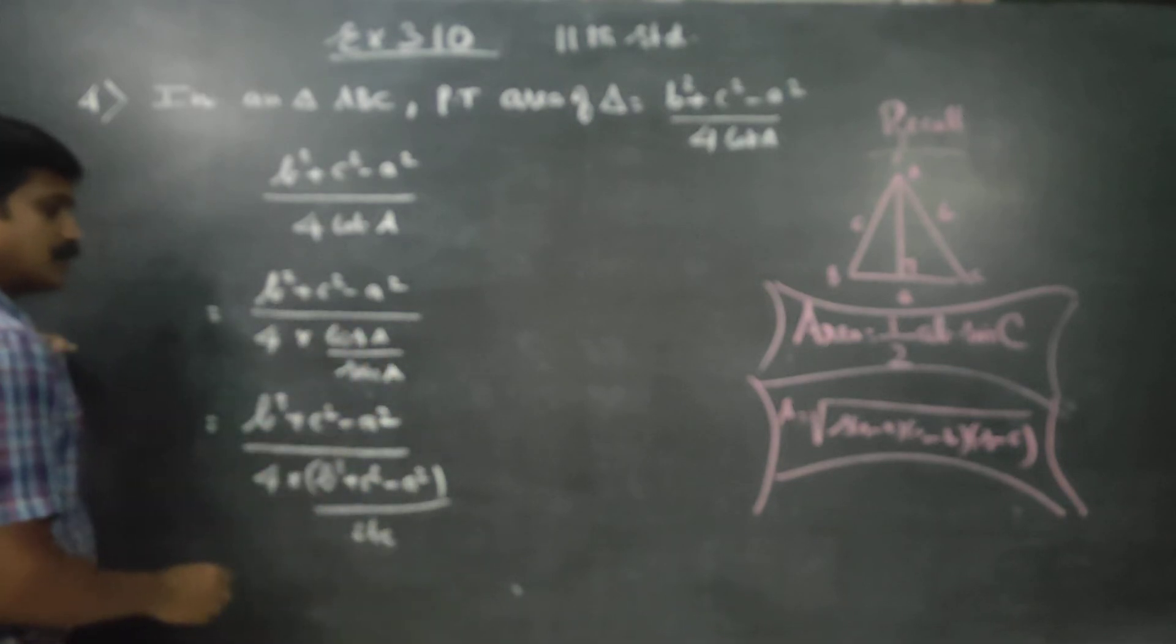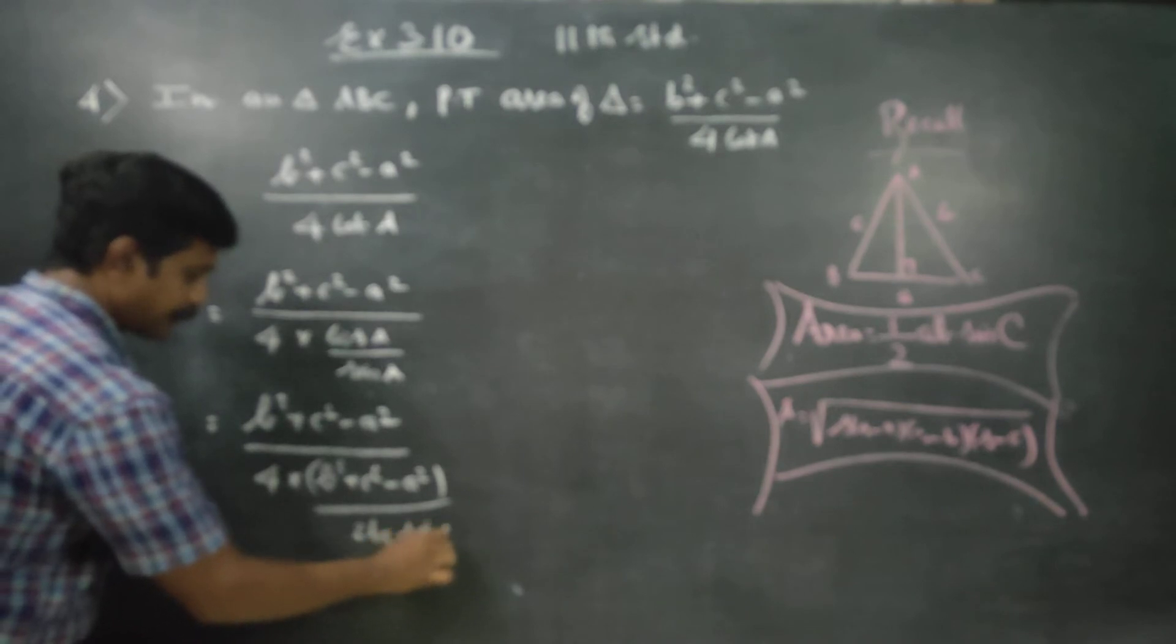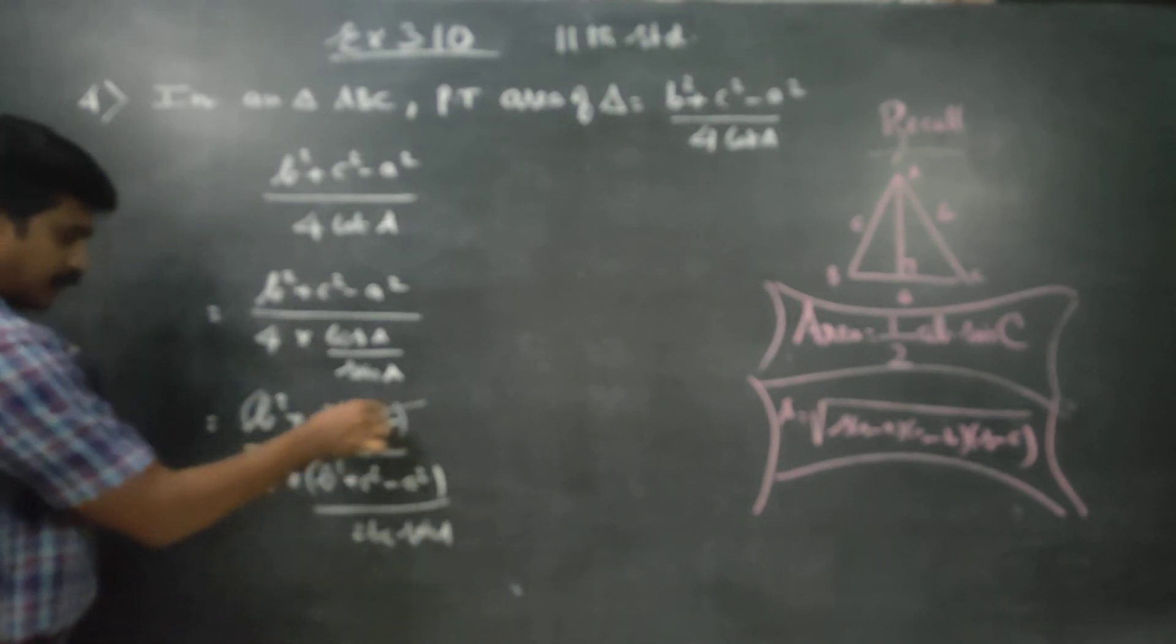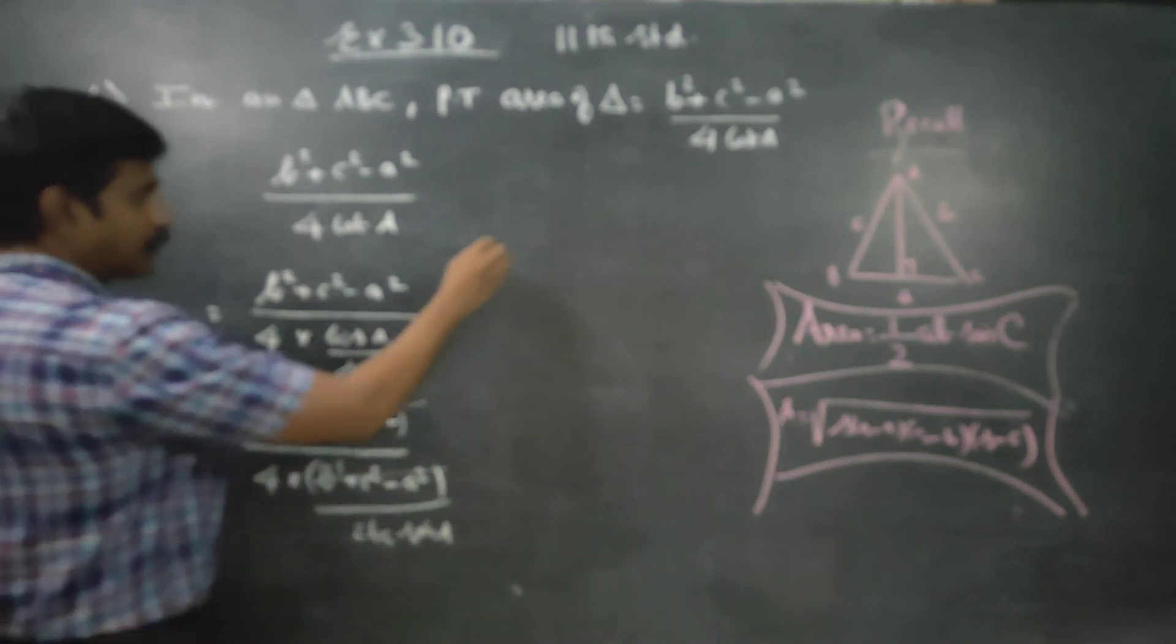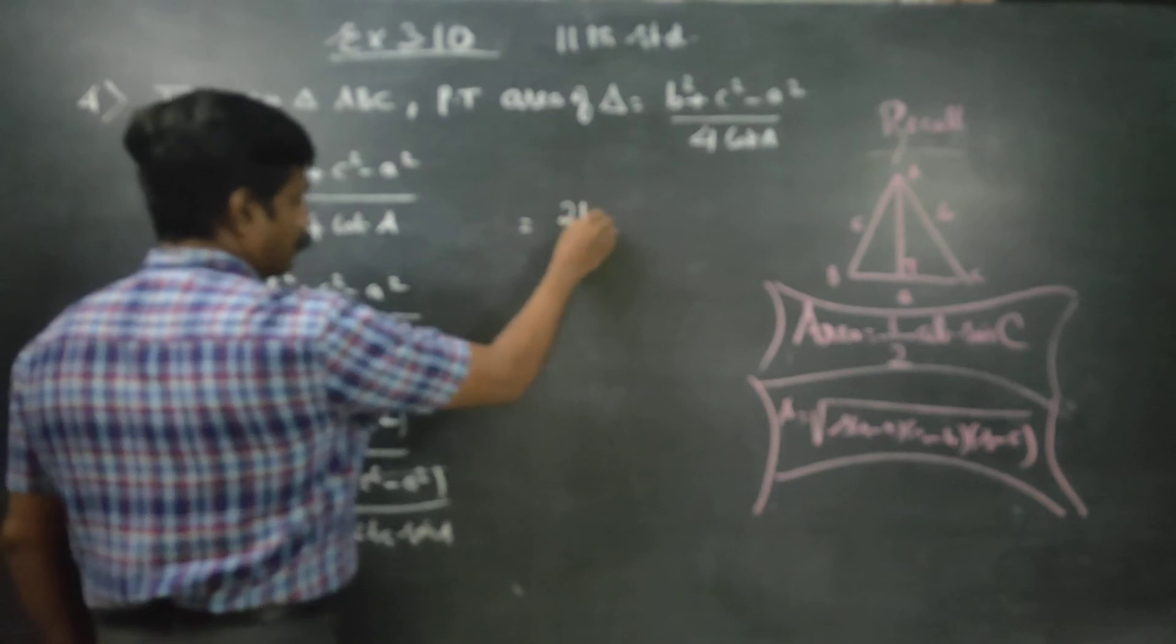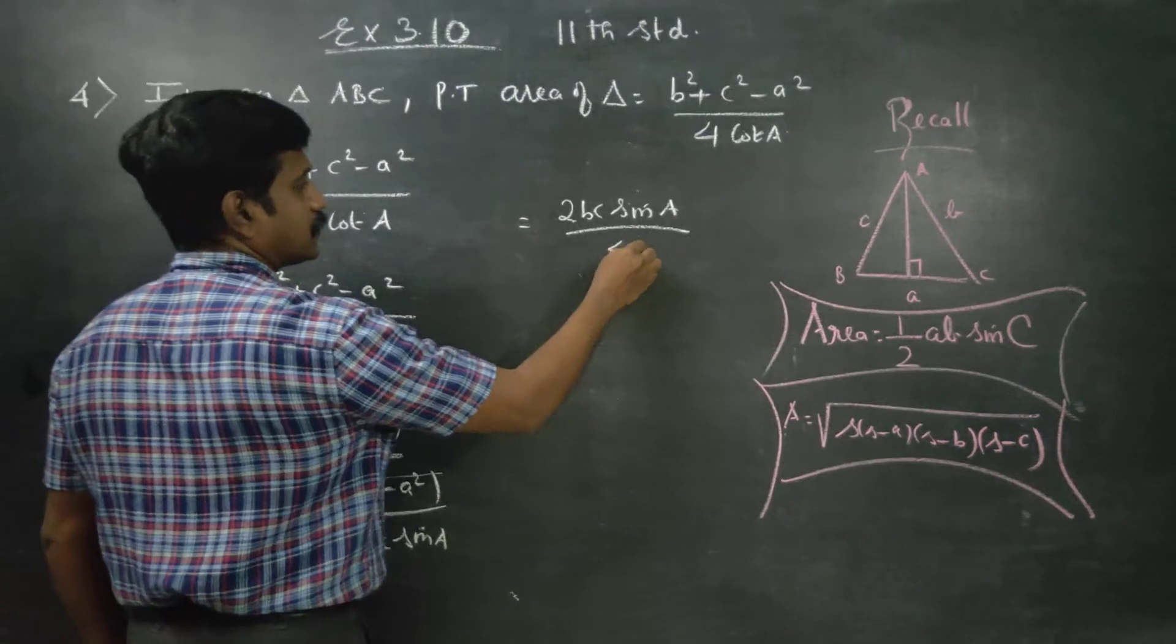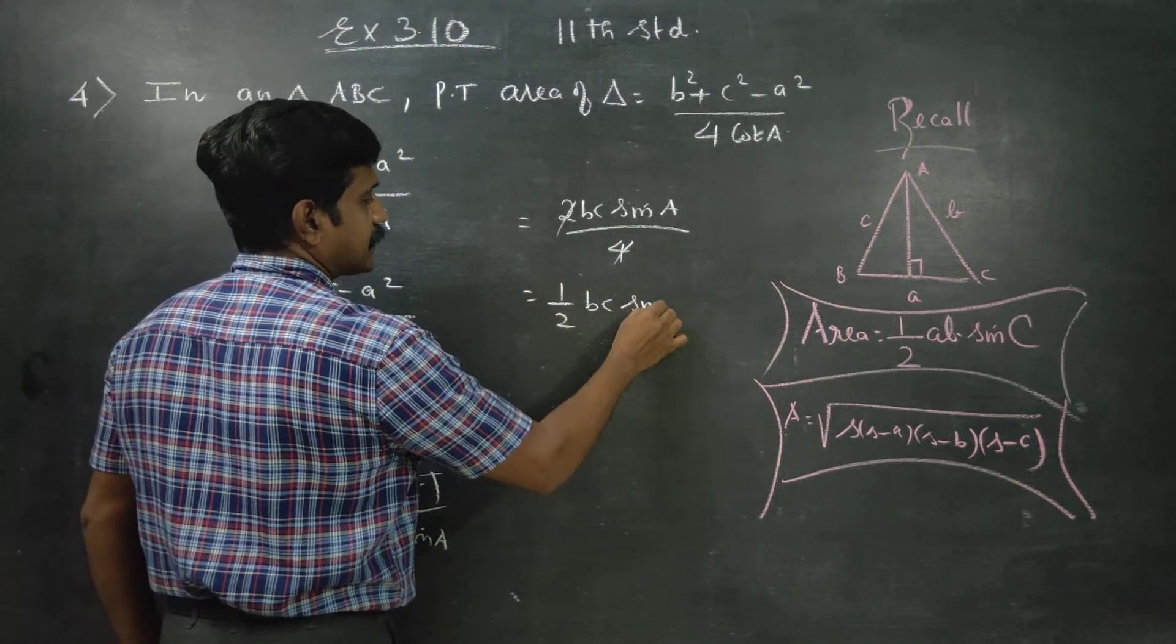This is cos a formula. Denominator is equal to 2bc sin a by 4, right? After canceling, one by 2bc sin a.